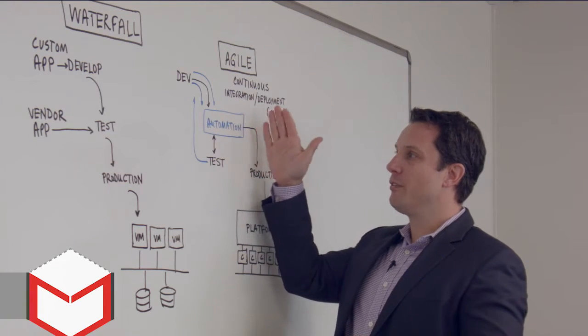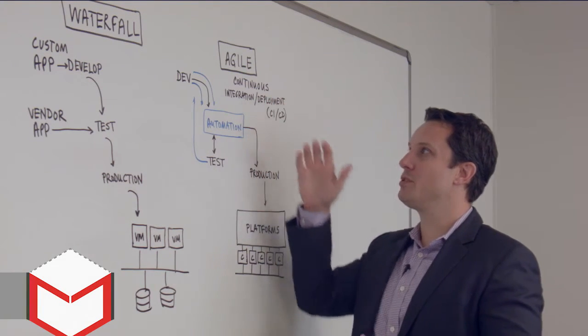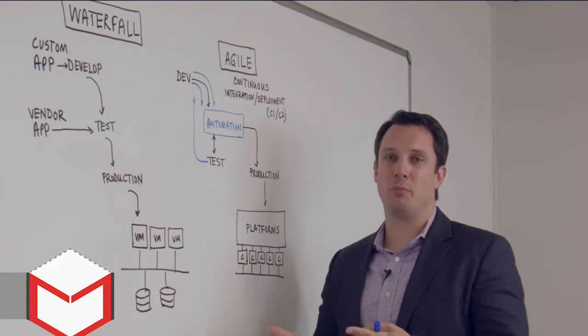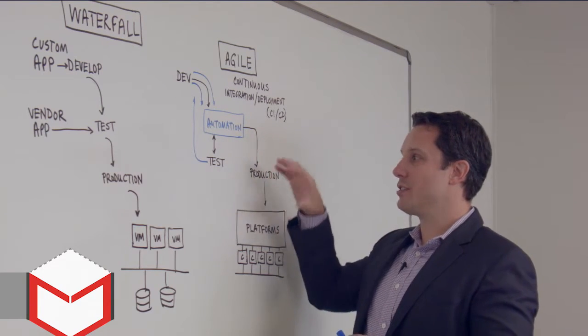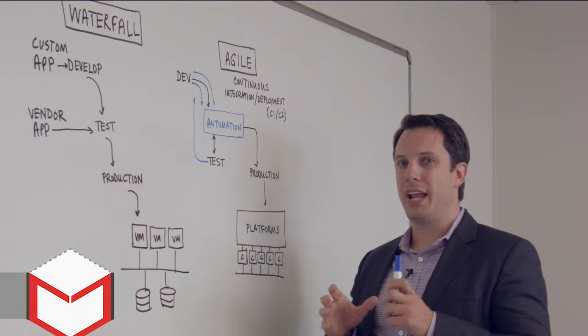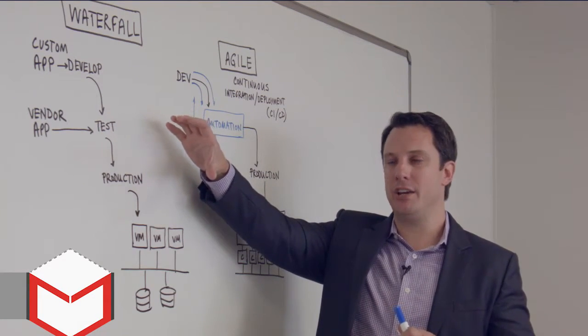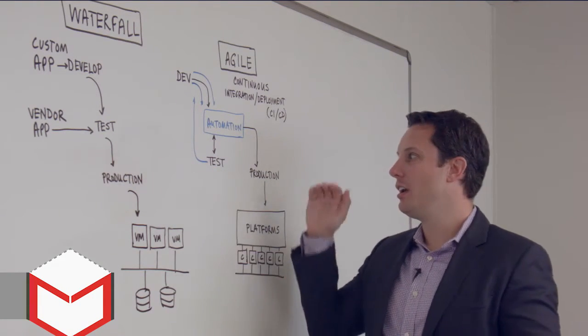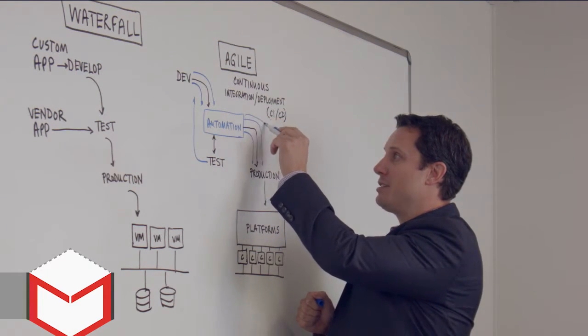And then as we move through this automation cycle, which in a lot of cases is called continuous integration or continuous deployment. Sometimes you'll see it hyphenated as CI/CD. Then we're going to start pushing things into production. And what's different here is this tended to be a huge application pushed one time into production. In these environments, we're talking about pushing multiple times to production on a regular basis.